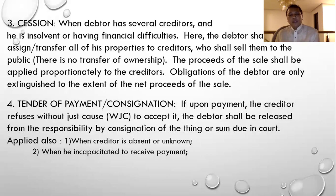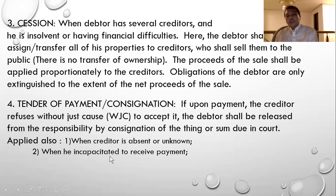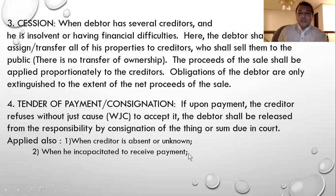Consignation can also be applied when the creditor is incapacitated to receive payment. A person is incapacitated when he is insane or demented, or when he is imprisoned for more than six years — that is called civil interdiction — so he is incapacitated.